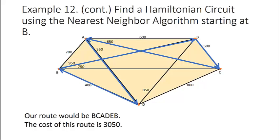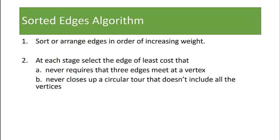Now let's learn one more algorithm: the sorted edges algorithm. Our goal is to sort or arrange edges in order of increasing weight, and then at each stage select the edge of least cost that (A) never requires three edges meeting at a vertex, and (B) never closes up a circular tour that doesn't include all of the vertices.